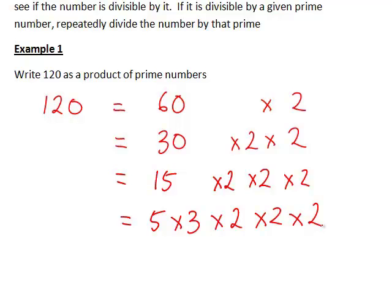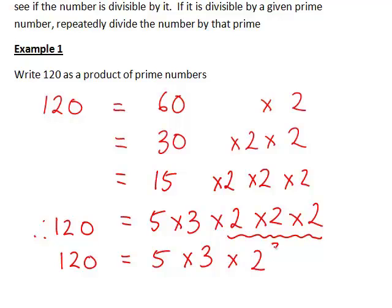We now stop, as we have written 120 as a product of primes. Although we could also rewrite 2 times 2 times 2 as 2 cubed. So 120 equals 5 times 3 times 2 cubed is an alternative way of writing it.